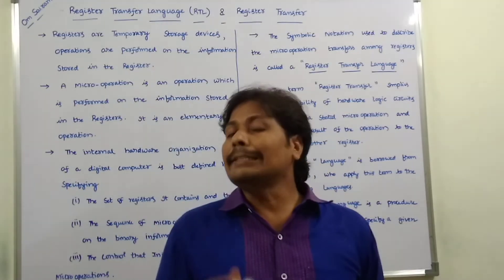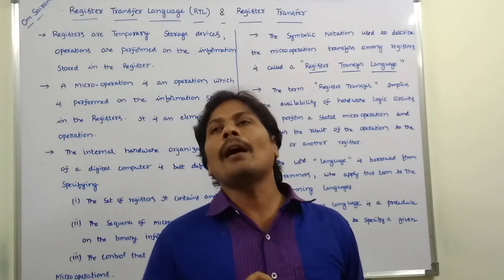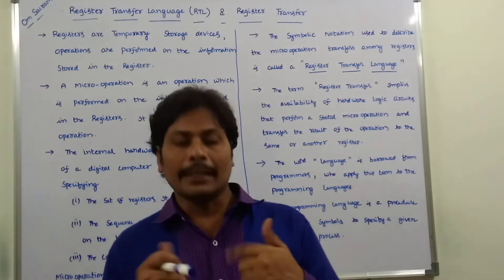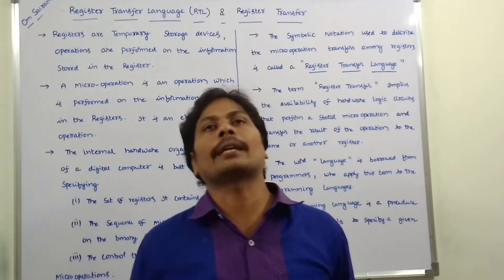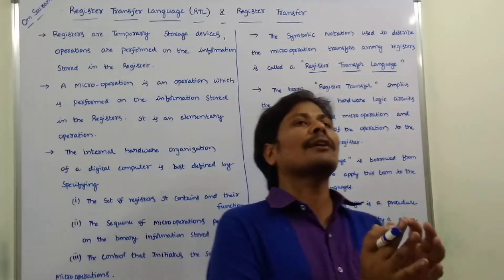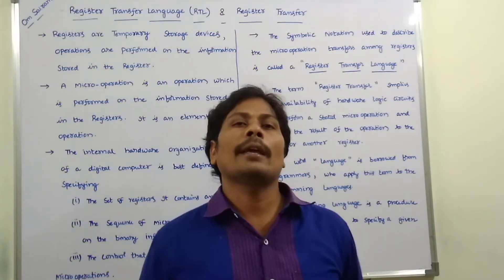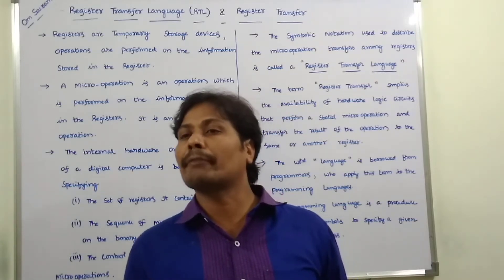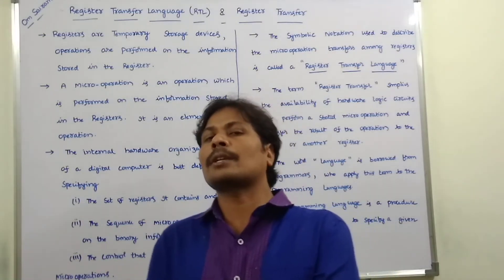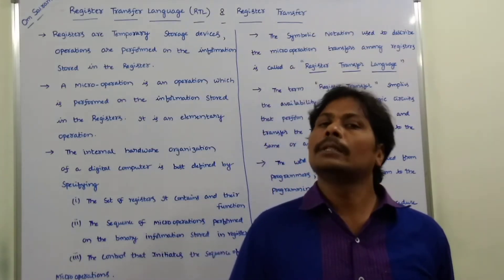Next, the internal organization of a computer is best specified by three points. The internal hardware organization is best when it satisfies the following three conditions. First, a set of registers and its functions — how many registers are there and what are the functions of each register. Second, the micro operations that can be performed on the information stored in the registers.